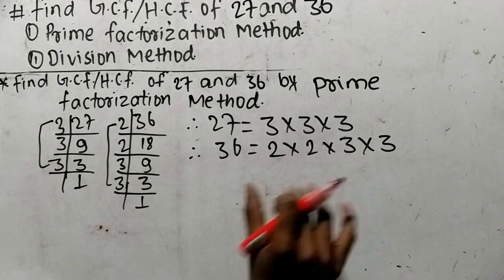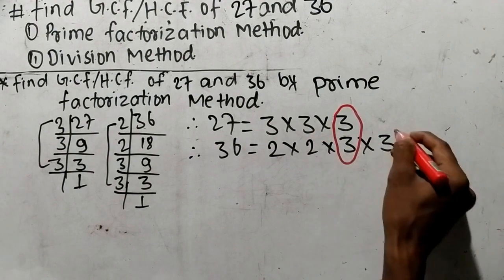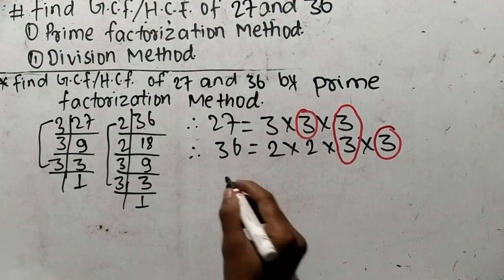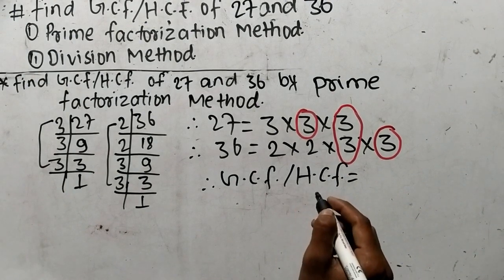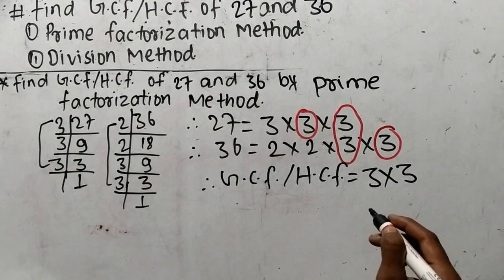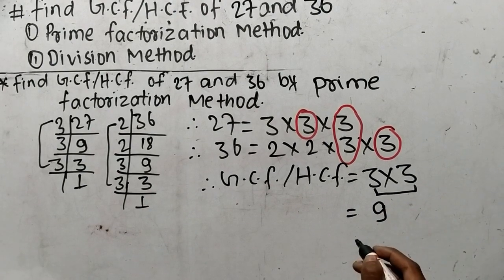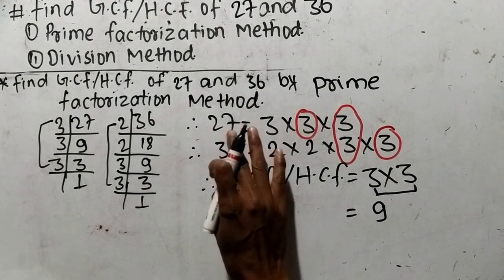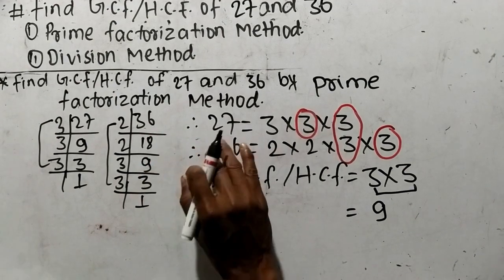Now we find out the common factors in these prime factors. Here is 3 and here is also 3, so 3 is a common factor. Likewise, here is another 3 and here is also 3, so 3 is also a common factor. Here is 3 and here is 2, which is a non-common factor. As you know, GCF or HCF is the product of only the common factors, so it is 3 times 3 equals 9. Therefore 9 is the GCF or HCF of 27 and 36. In this way we can find out GCF or HCF by prime factorization method.